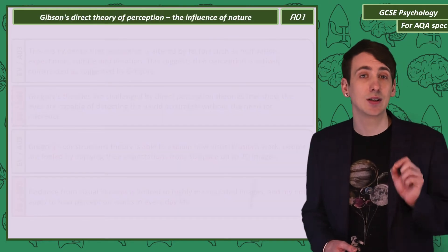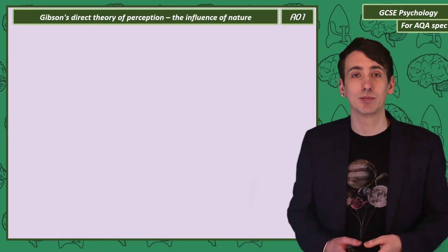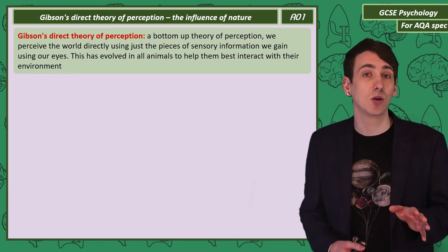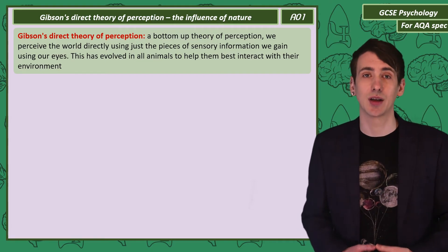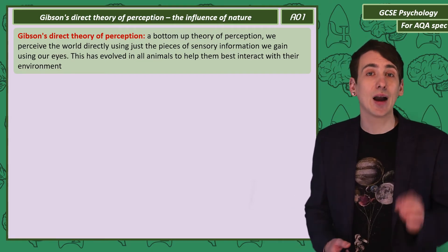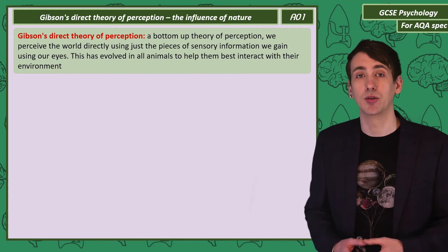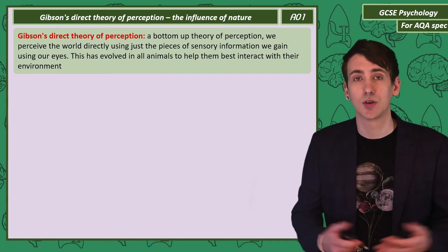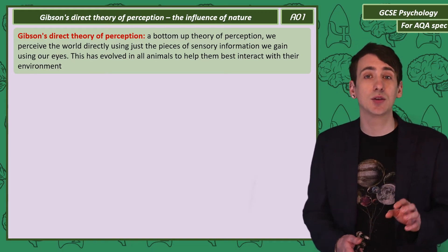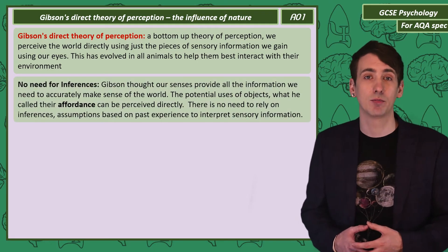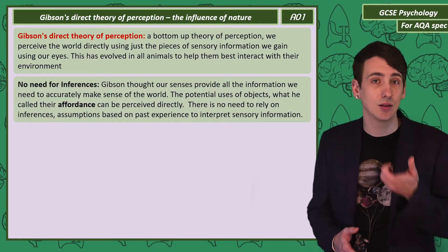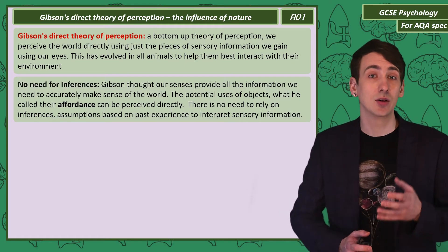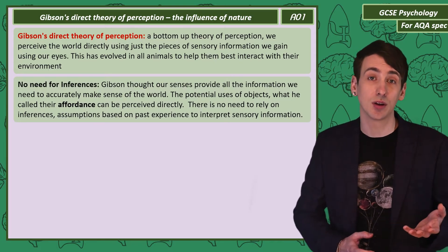So the alternate theory of perception is Gibson's direct theory. This is described as a bottom-up theory. We passively and accurately perceive the world directly just using the information from our senses. Gibson thought that accurate, direct perception has evolved in animals to help them navigate the environment. Those animals best adapted to accurately perceive the world survive. Gibson thought that inferences weren't needed to make sense of visual information. The use of an object, something he termed its affordances, are directly perceivable. So an apple is something you can directly perceive as food, but also something that can be thrown.